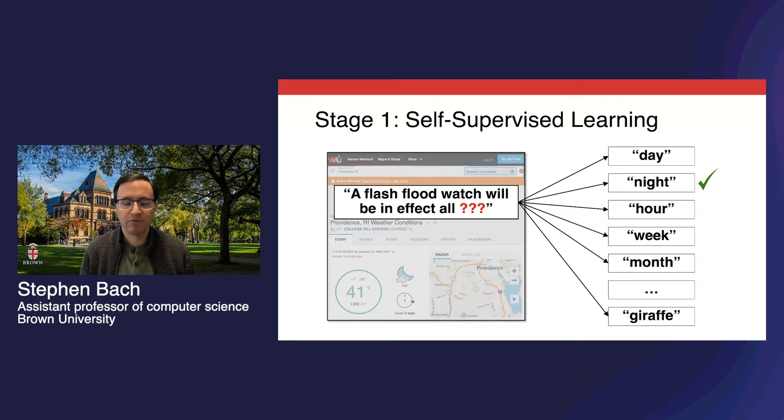In this example, we have text that came from a weather website. If we ask the model to predict the next word, it has to learn something about language and the domain of weather to generate a plausible answer. The words on the right represent a ranked list of its predictions. It ranges all the way from likely answers like day or night to less plausible ones like month. All the way at the bottom are words that should be assigned very low probability because they would be nonsensical.